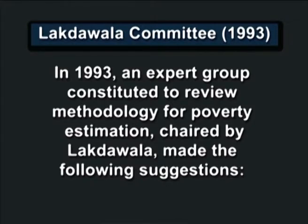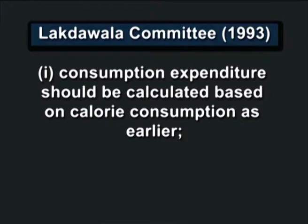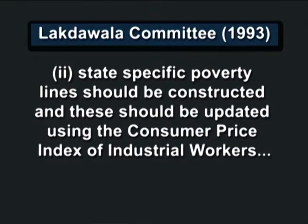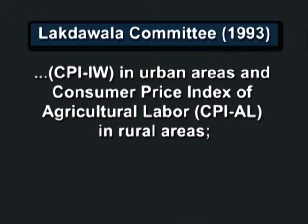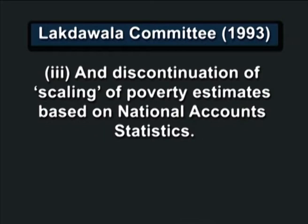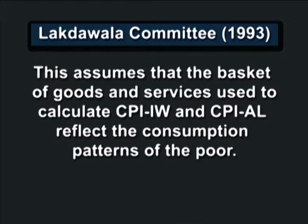In 1993, an expert group constituted to review the methodology for poverty estimation, chaired by Lakdawala, made the following suggestions: consumption expenditure should be calculated based on calorie consumption as earlier; state-specific poverty lines should be constructed and updated using the Consumer Price Index for Industrial Workers (CPI-IW) in urban areas and Consumer Price Index of Agricultural Labour (CPI-AL) in rural areas. This assumes that the basket of goods and services used to calculate these indices reflects the consumption patterns of the poor.